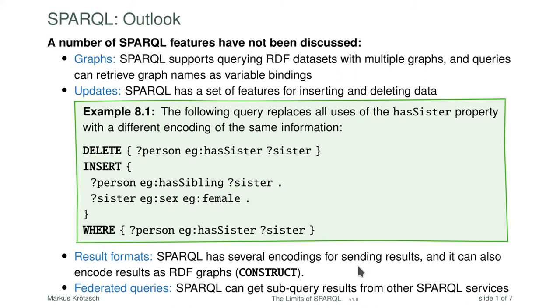Moreover, there are several result formats we didn't discuss. In particular, it's also possible to ask queries that return graphs — this is done with the CONSTRUCT feature. And finally, there are federated queries. It is possible for a SPARQL endpoint to obtain data from other SPARQL services, and to write queries which pull in data from remote places and then combine this data locally with the contents of your database. This is called federation.